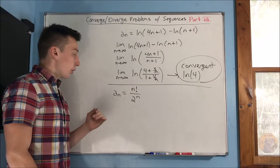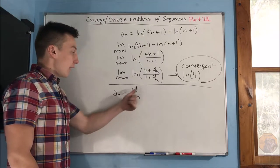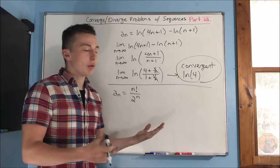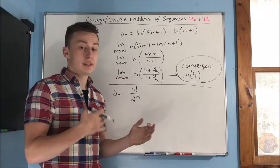And we have our next sequence up on the board here. a_n equals n factorial over 2 to the n. Now, I'm going to go over this in a later video because this is going to pop up more and more with series and sequences.